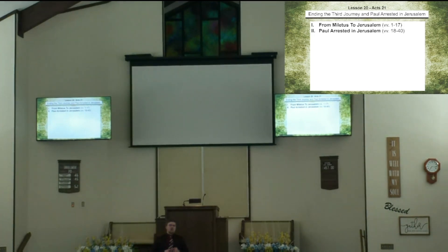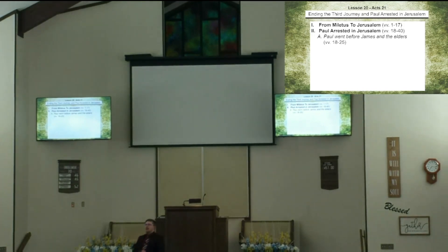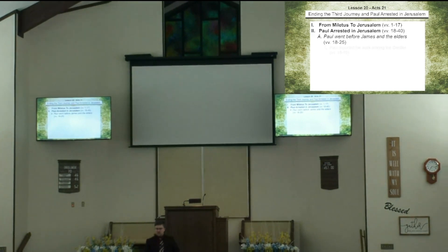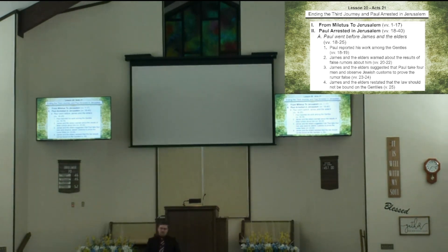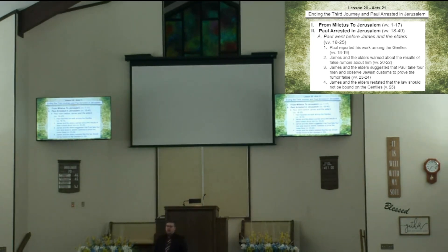Verse 18 begins what we already discussed on Sunday — verses 18-32. We'll quickly review that section and continue into the next chapter. In verses 18-25, Paul comes before James and the elders in Jerusalem. Four things are discussed. He comes in verses 18-19 and reports the work he has done among the Gentiles. He related how God had worked among the Gentiles through his ministry. Hearing this, James and the elders greatly rejoiced and glorified God in verse 20.